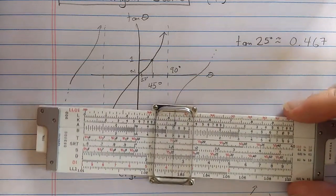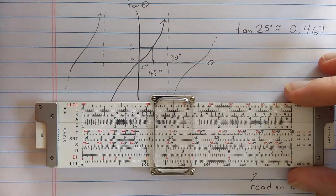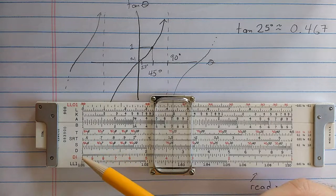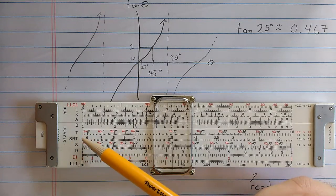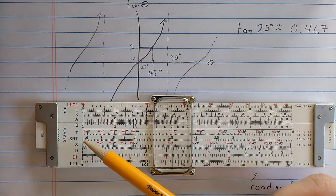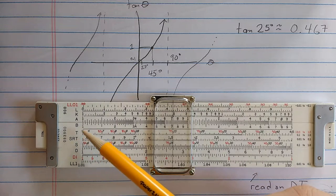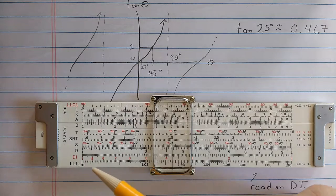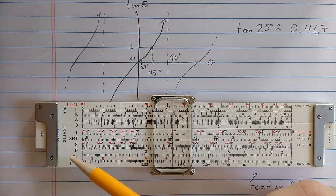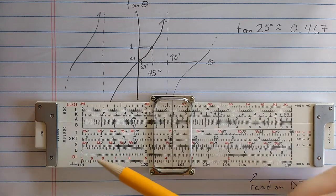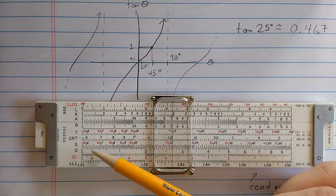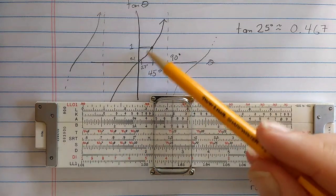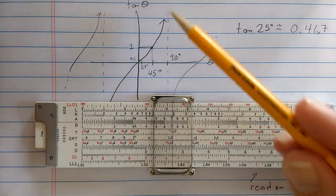Now some slide rules, especially European slide rules and later American slide rules, instead of having this set up with a T and a DI, they have two tangent ranges, sometimes called T1 and T2. Some slide rules are marked tangent less than 45, tangent greater than 45. If you have those scales, you probably don't have this DI scale. And those scales both read directly against D, one for range 0.1 to 1, and another one for range 1 to 10.